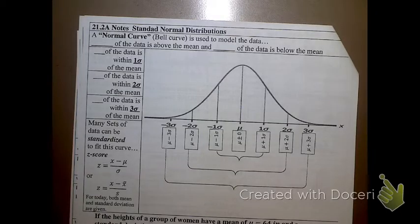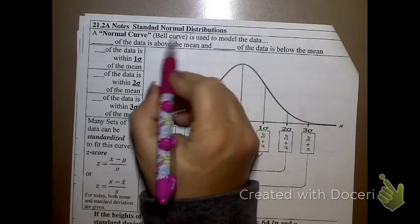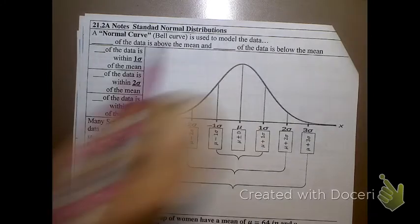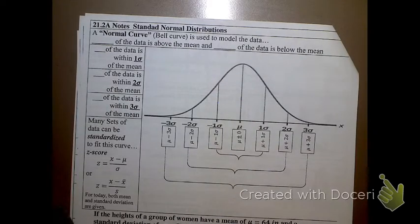So here we go with the standard normal curve, also known as the bell curve. Any ideas why it's called the bell curve? Because it looks like a bell. Genius, right?